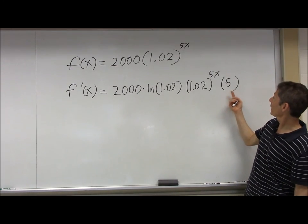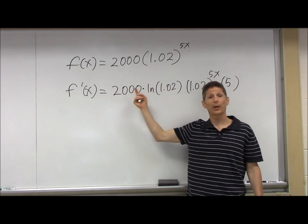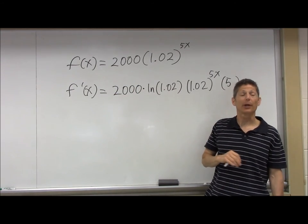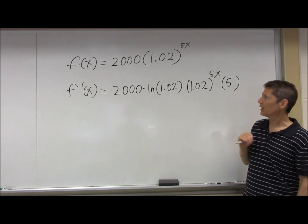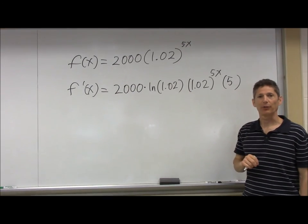Now this, of course, I could simplify a little bit. I could multiply 5 times 7,000. And call that 10,000 times the natural log of 1.02 times... But basically this tells me the rate of change of this exponential function. Beautiful.